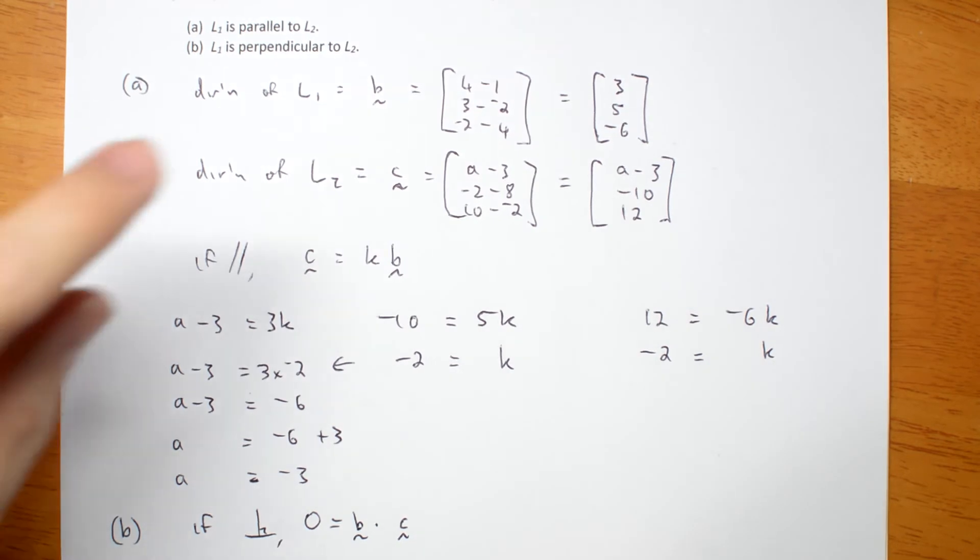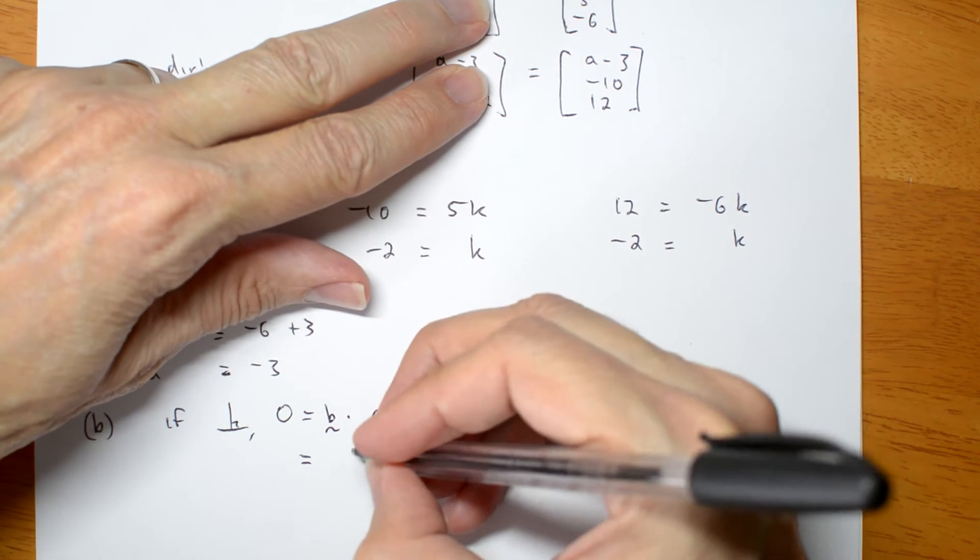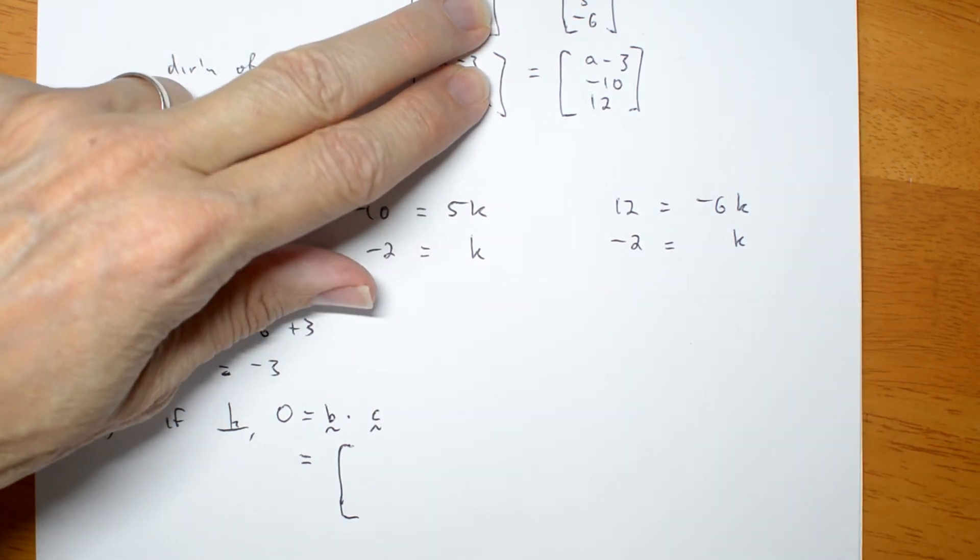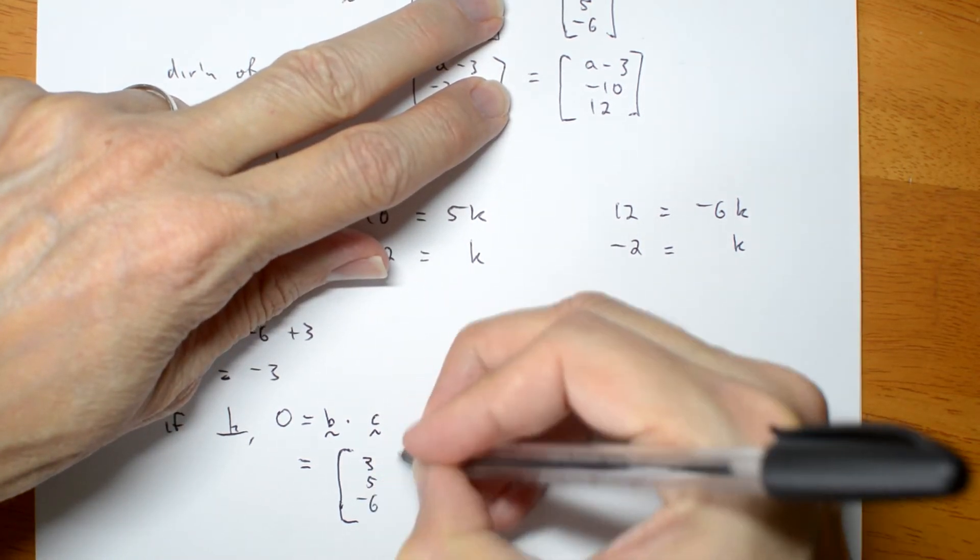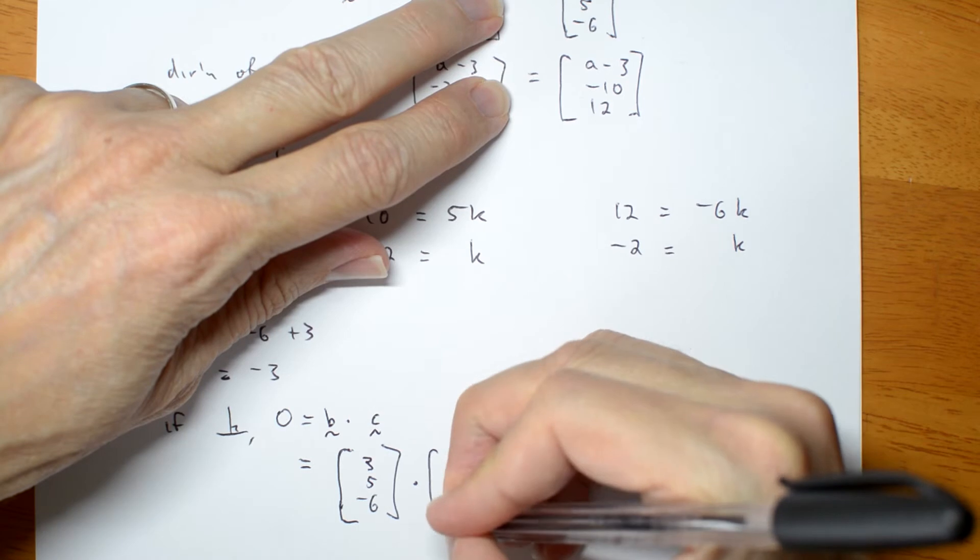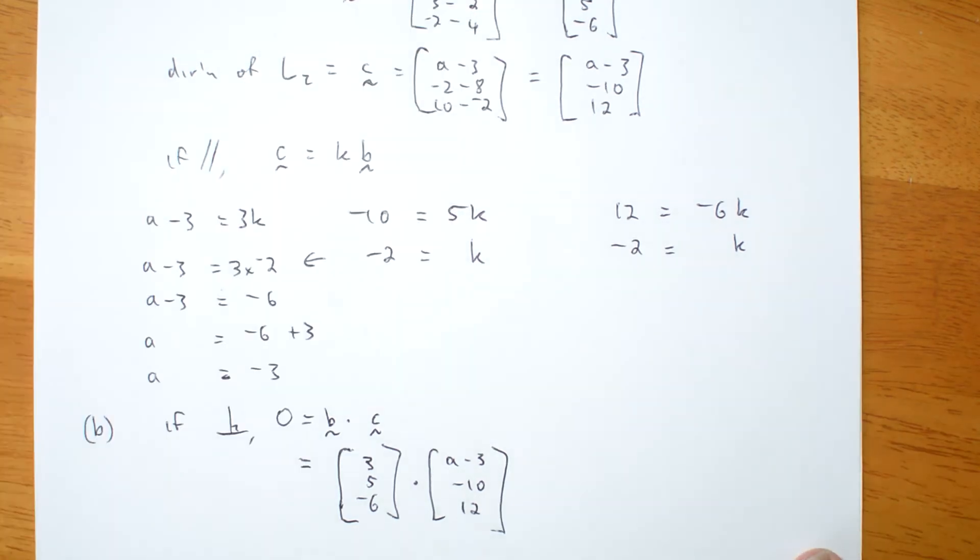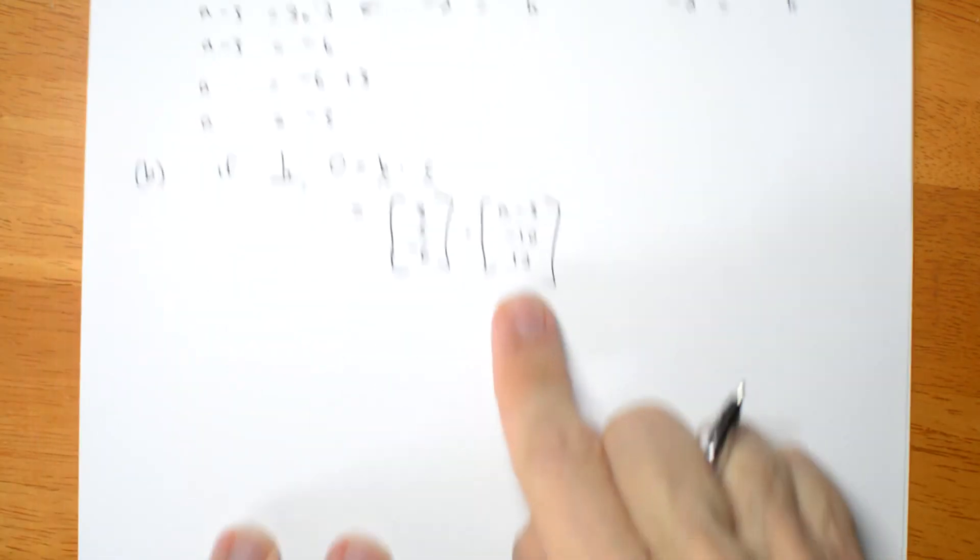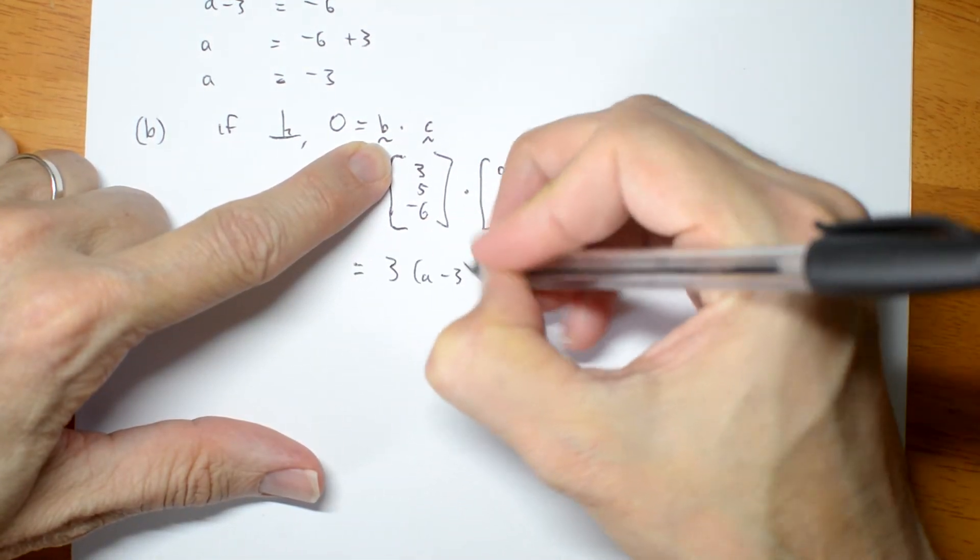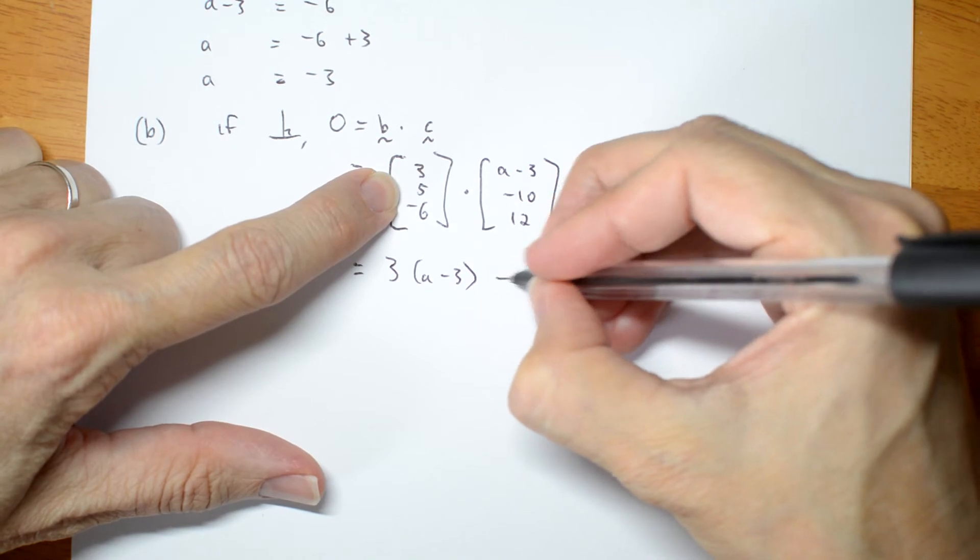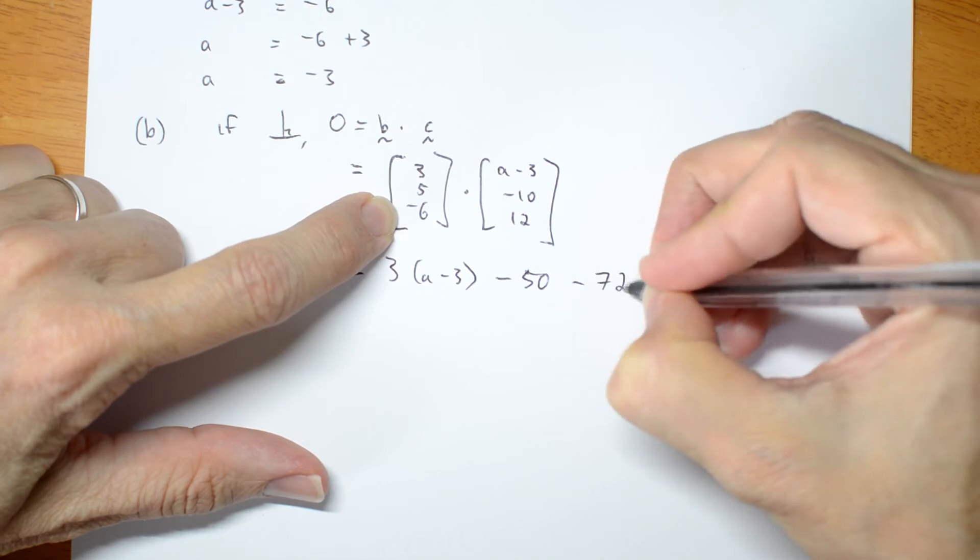I'm just going to copy these two vectors down. Sorry, I don't think you're going to quite be able to see all of it. 3, 5, negative 6, dot product with A minus 3, negative 10, 12. Now they're component vectors, so that's easy for me to do the dot product. It's 3 times A minus 3, plus 5 times negative 10 is negative 50, plus negative 6 times 12 is minus 72.